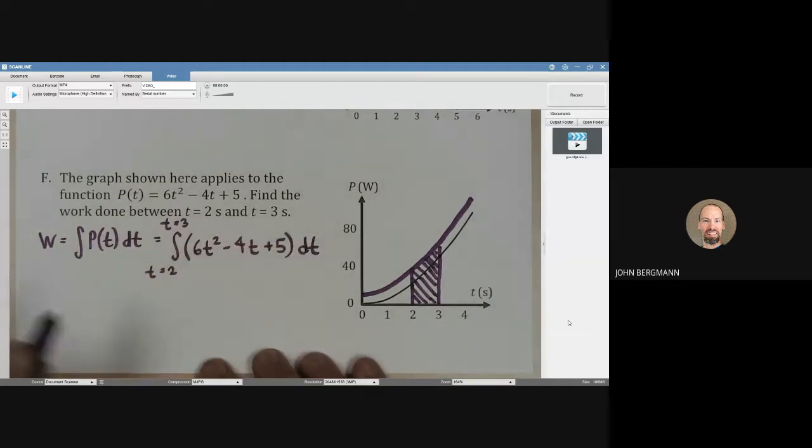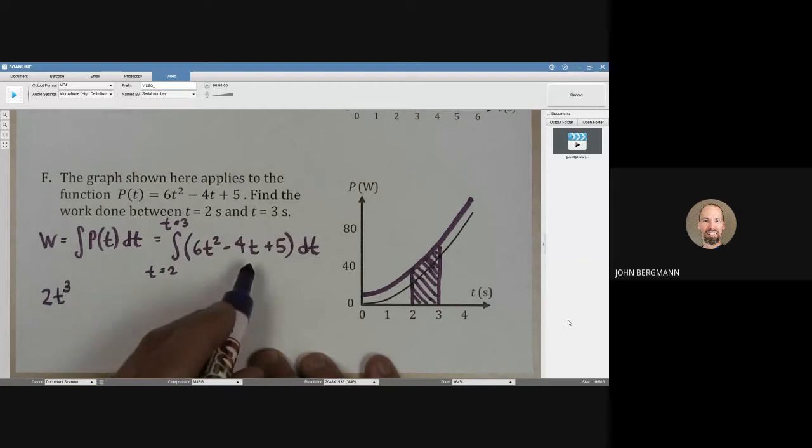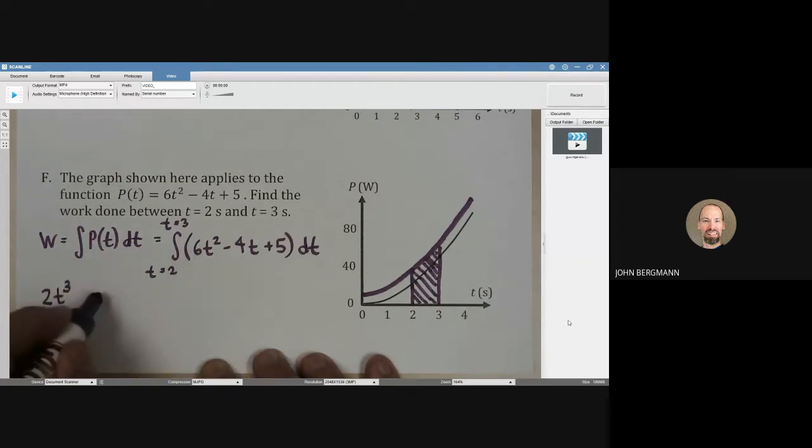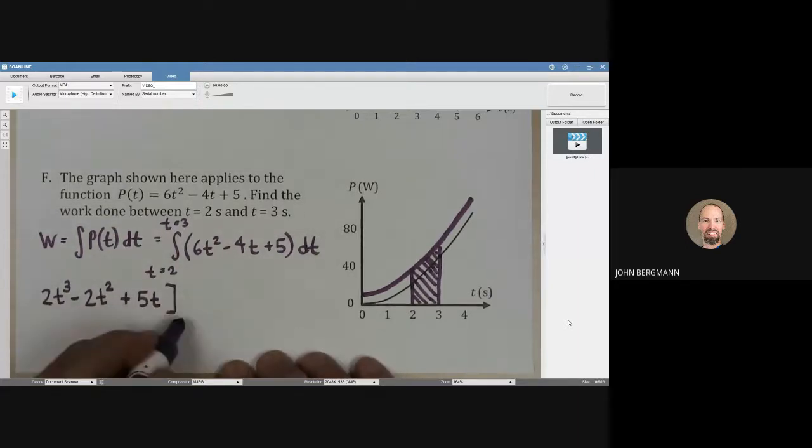So let's see if we can do that. Whenever we integrate polynomials, we power up. So this is going to go to t to the third and then we have to divide by 3, so won't that be a 2 out front? And then here we're going to raise that to t to the second power divided by 2. So I think that's going to be minus 2t squared. And then we're going to go plus 5t like that. And we're going to go from limit of 2 to 3.